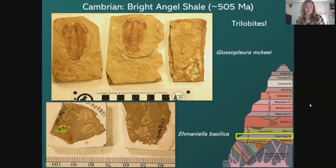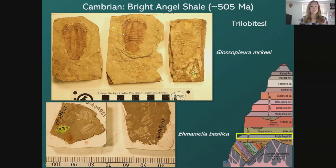Here are some examples of those creatures — trilobites. Trilobites are an extinct group of marine arthropods that were among the earliest organisms to appear in the fossil record, and they were the first organisms to develop eyes. Here are some examples we find in the Bright Angel Shale: the larger ones include Glossopleura mckii, and some smaller ones called Ameniella basilica — just a few of the types of trilobites we actually find.